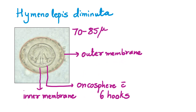Moving on to the rat tapeworm, Hymenolepis diminuta. When man becomes the host, the eggs found in stool specimens are larger — 70 to 85 microns in size. There is an outer shell and an inner shell. Between these two, there is nothing special. Sometimes we can see some refractile granules, but the polar filaments, yolk granules, and polar thickenings are all missing. Within the inner shell, we can see the hexacanth onchosphere with six hooks. This concludes Hymenolepis nana and diminuta.